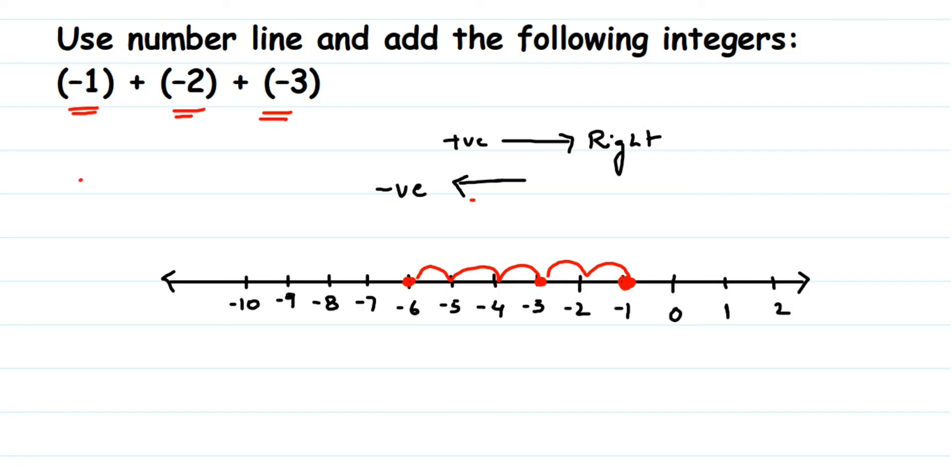So when you add minus 1 plus minus 2 plus minus 3, the answer will be equal to minus 6. So here we have stopped, so minus 6 is the answer. I hope this question is clear. In case you have any other question or doubt, you can drop a comment. Thank you so much for watching.